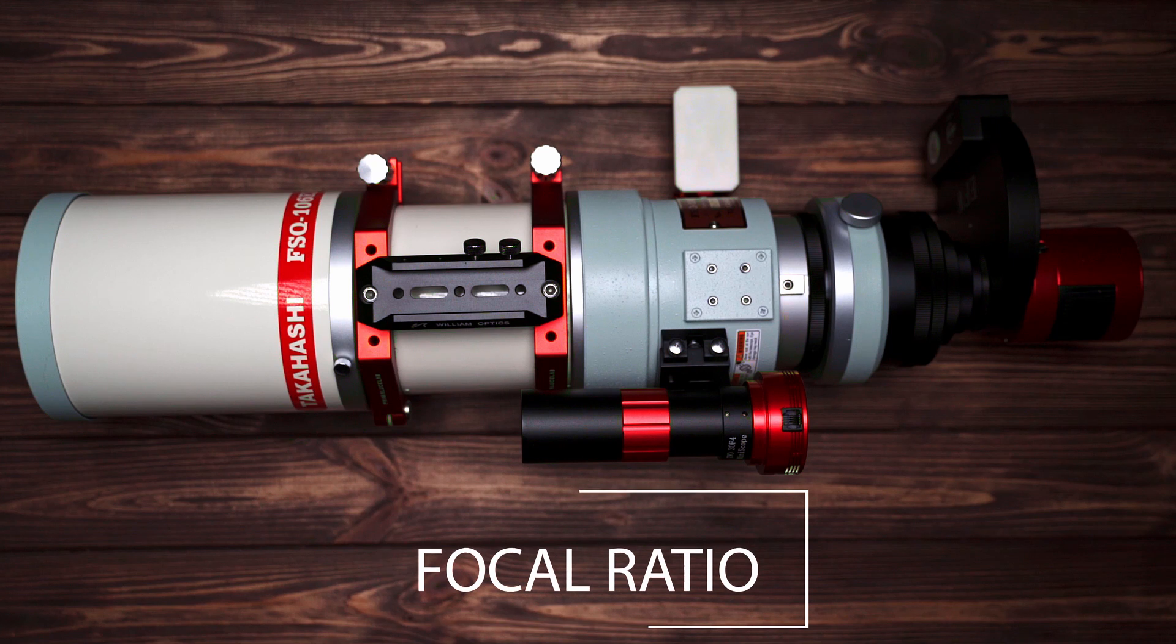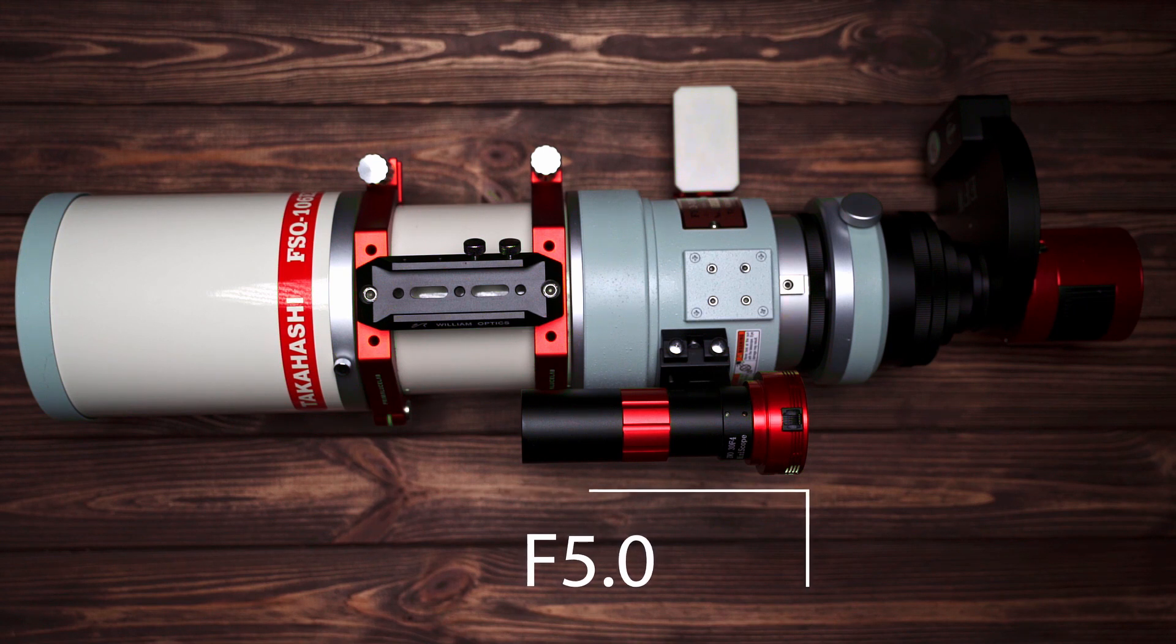The native focal ratio is F5.0, which I consider is fairly fast compared to a lot of other telescopes within this range of focal length. Especially if you live in a city where it doesn't have many clear nights, focal ratio becomes a key factor when you try to decide which telescope to buy.